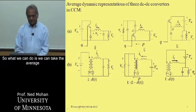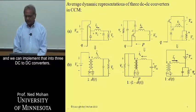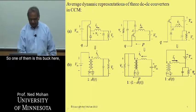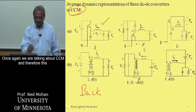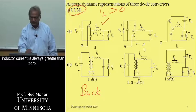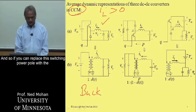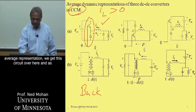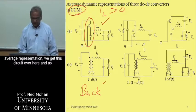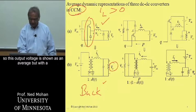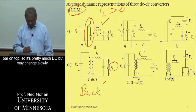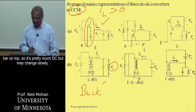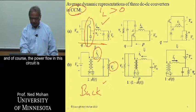We can take the average representation of the switching power pole and implement it into three DC-to-DC converters. For the buck converter, the switching representation shows the inductor current always greater than zero in CCM. Replacing the switching power pole with the average representation gives the averaged circuit, where the output voltage and inductor current are shown with a bar — mostly DC but may change slowly.